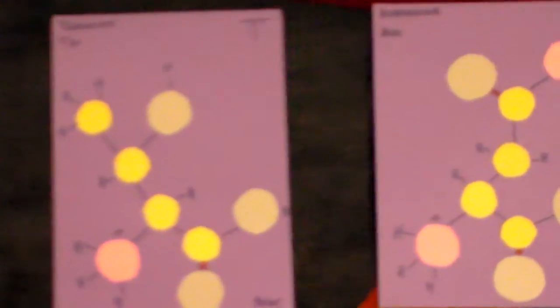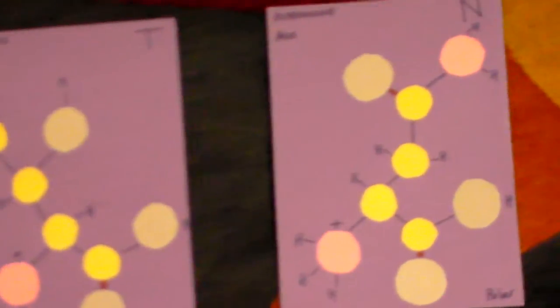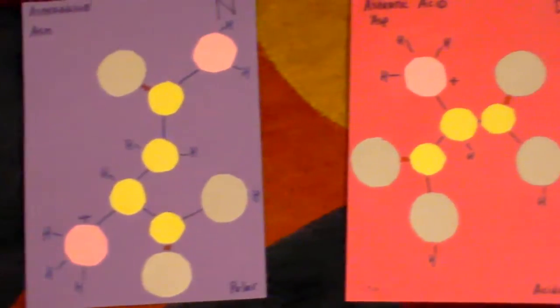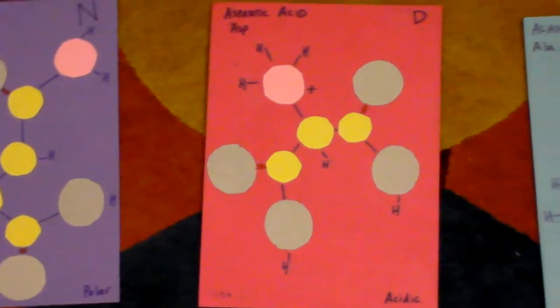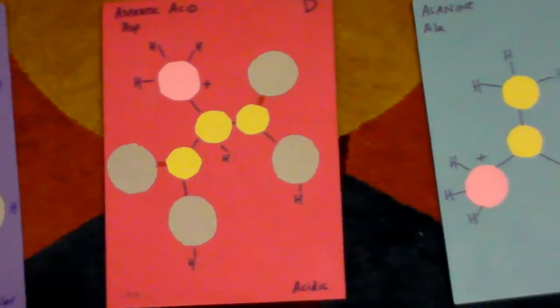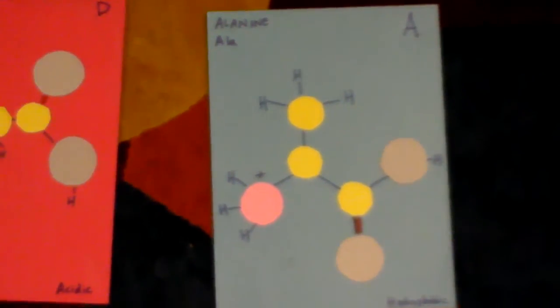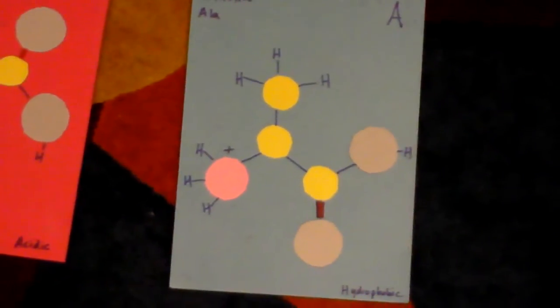Each amino acid is its own entity. Side chains determine their identity. They are polar, non-polar, acidic, or basic.